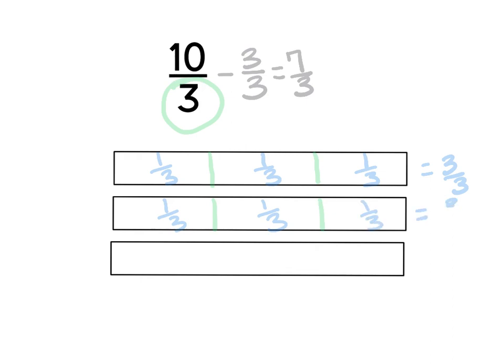That's another three-thirds, so I'm going to subtract: seven-thirds minus three-thirds gives me four-thirds. Now I have to stop and think again — is this still an improper fraction? The answer is yes, because the numerator is larger than the denominator, so I need to continue to decompose.